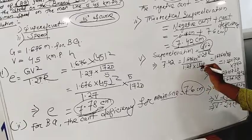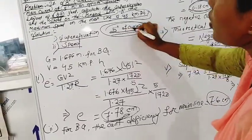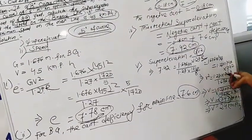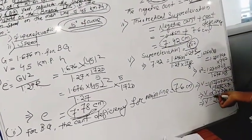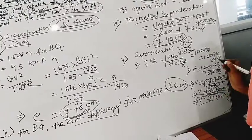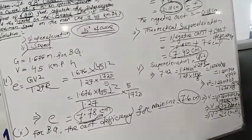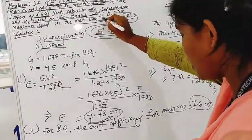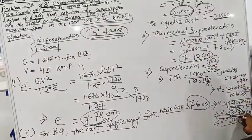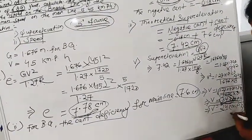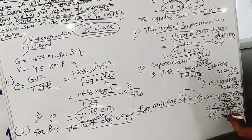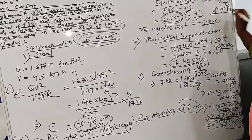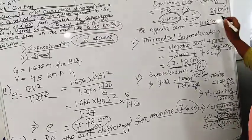Simplifying the speed calculation, V = 34.7 km per hour, but this is a theoretical speed. The maximum permissible speed on the branch line is 24 km per hour. Since 34.7 km/h exceeds 24 km/h, the maximum speed on the branch line is limited to 24 km per hour.